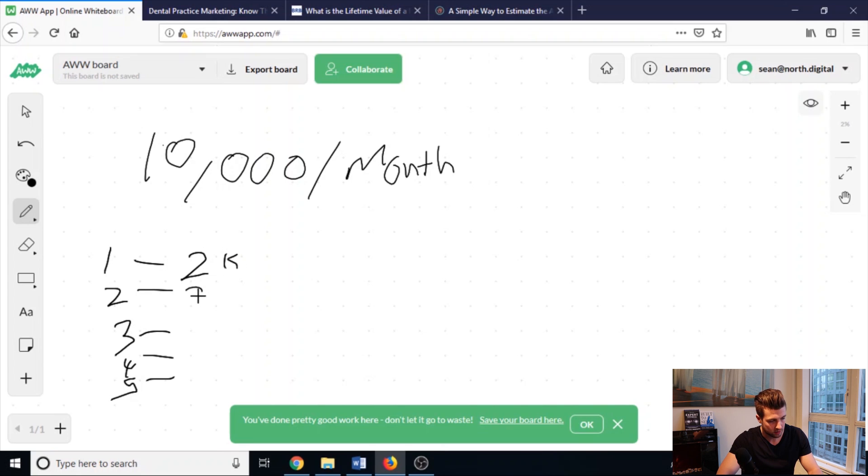Each paying you $2,000 per month. So $2,000, $2,000, $2,000, $2,000, $2,000. And then collectively, this is your $10,000 per month agency, $120,000 a year, your six-figure online business.